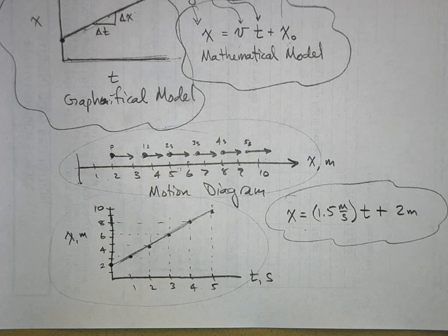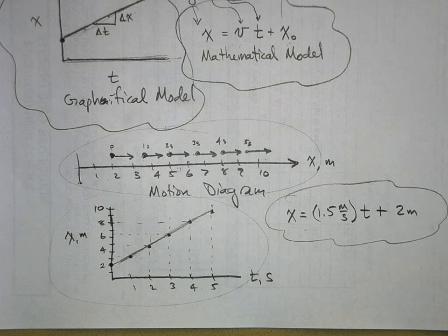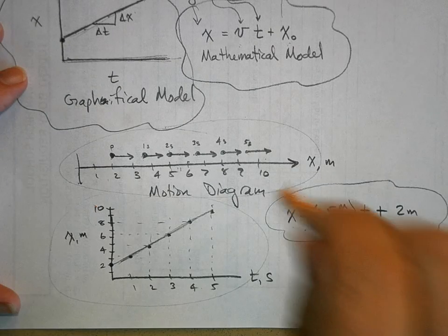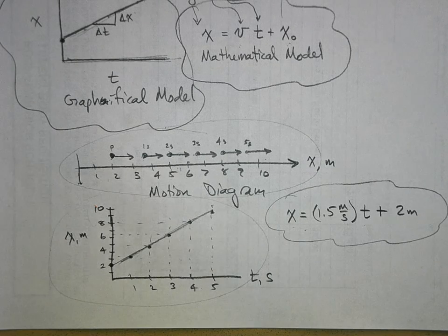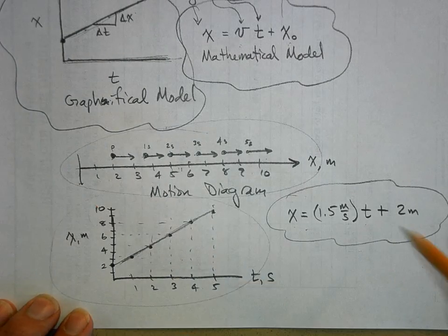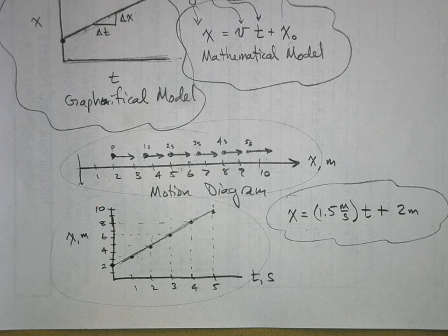You're probably getting bored with constant velocity motion — it is pretty boring, just a little car moving along a line at a constant speed. But learning to use these models with something very simple is important, because in the next unit we'll deal with acceleration where velocity is changing and it gets more complicated. If you master these ideas now, you'll be in good shape.